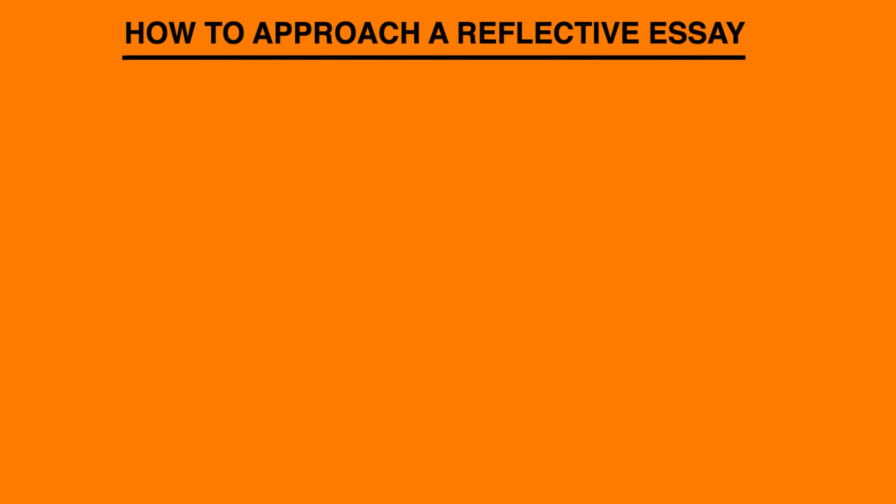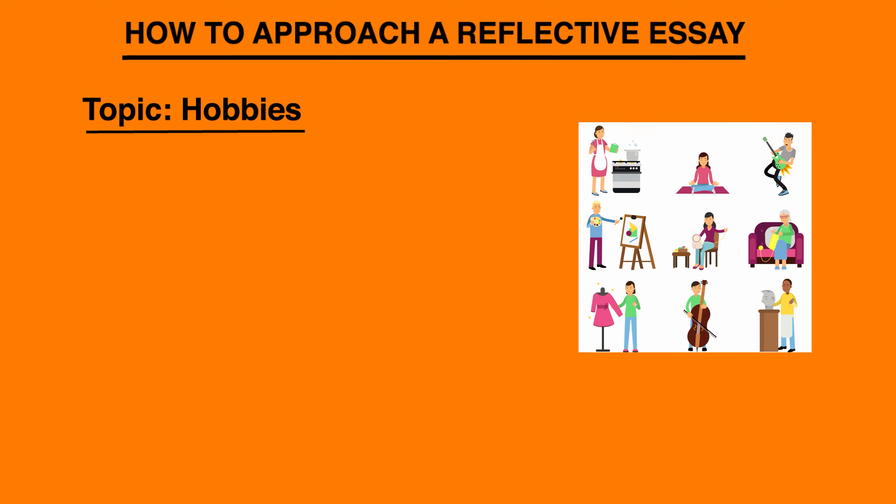So, if you get a topic like hobbies, how can you frame a reflective composition out of it? You can probably start with what hobbies exactly mean to you, or a general definition of what hobbies are. The introduction can be a general definition or what you understand by the term hobbies.